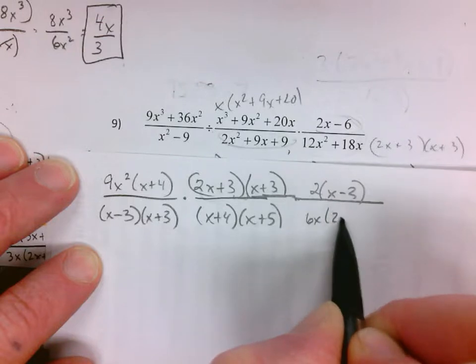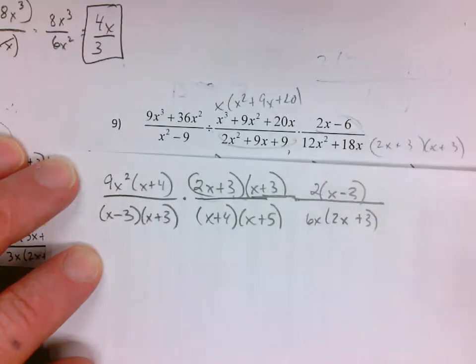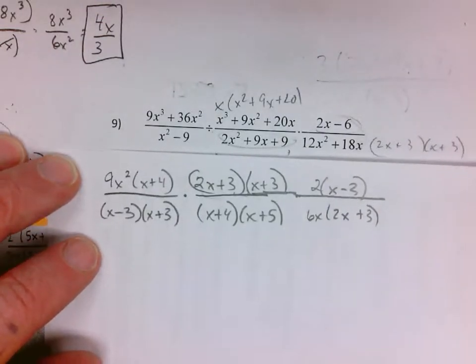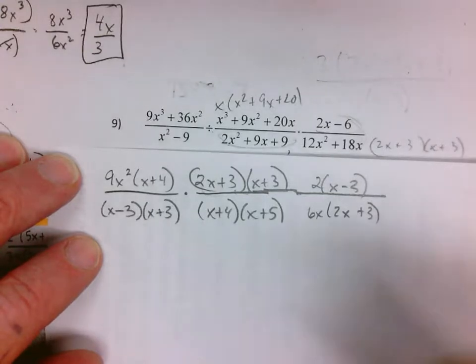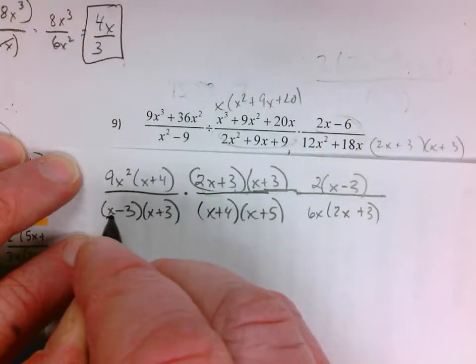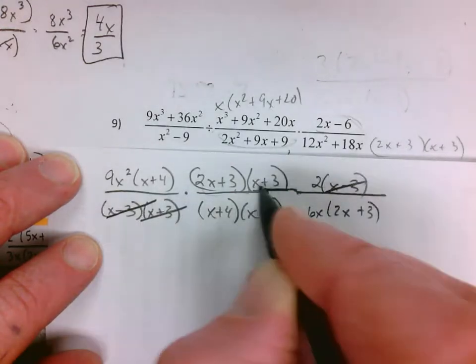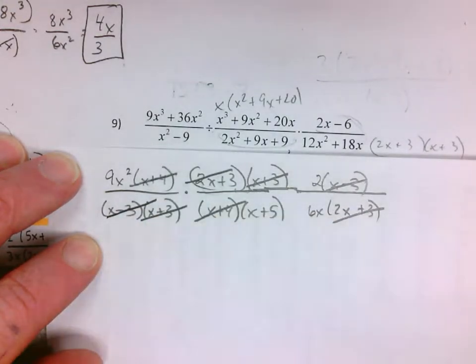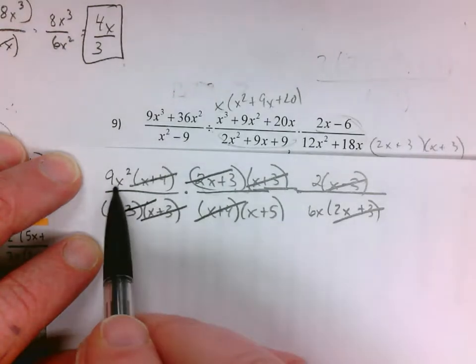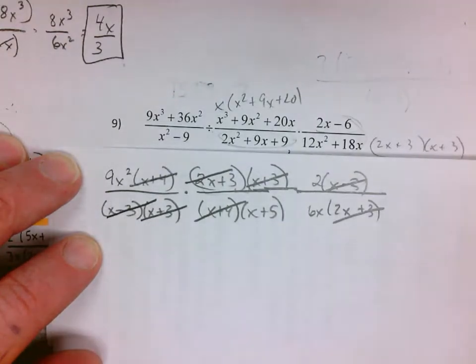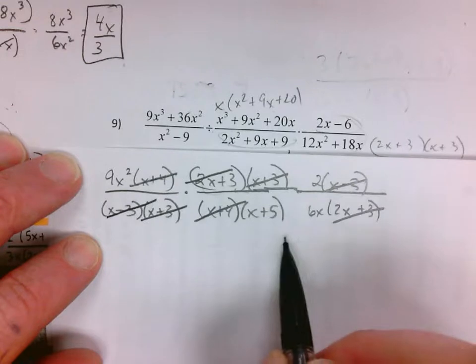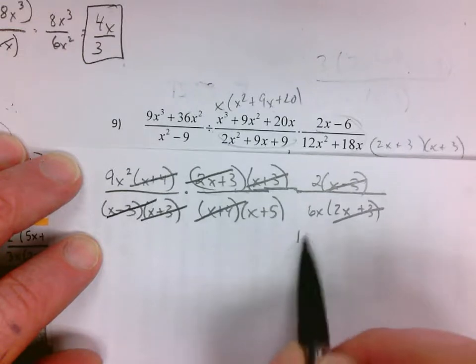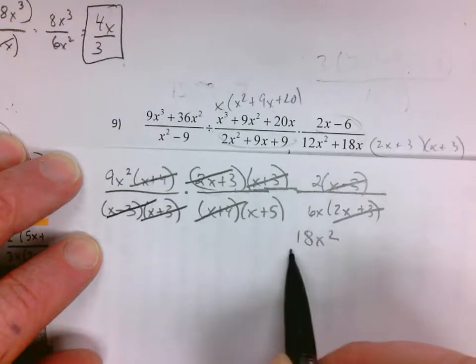me with 2x plus 3. Now I have a whole bunch of things I can reduce. So x minus 3, x plus 3, 2x plus 3, x plus 4. So I have 18x squared over 6x times x plus 5...